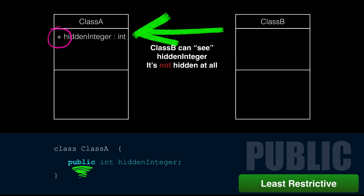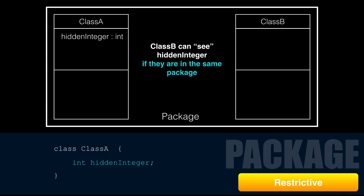Classes are usually public because you want classes to see each other. When you don't want a class to be accessed outside of a package, you can define your class as PackageScope. There's no keyword for PackageScope — you just leave it blank. There's no symbol in our boxes for PackageScope either.